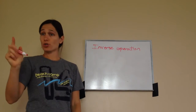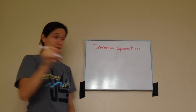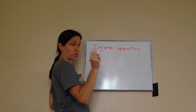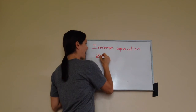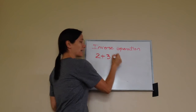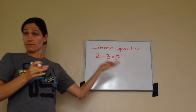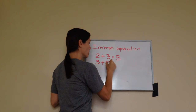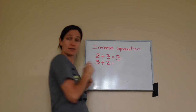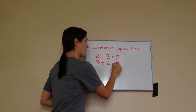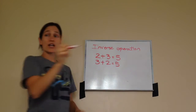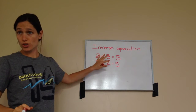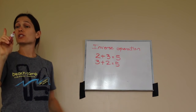Let's use the numbers two and three. I'm going to move to adding for just a minute. If I had two plus three, what would I get? Five. And if I added three plus two, what would I get? Five. Now watch what I do — I'm going to use these same numbers but make it a subtraction problem.